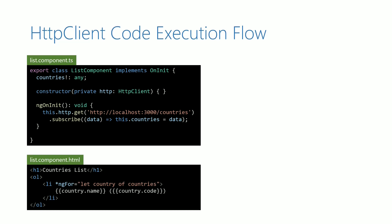When the Angular application starts, its components are loaded. When listComponent is loaded, its constructor is first called. The HTTP client service gets injected through the constructor parameter. If you are not familiar with the word inject, check the dependency injection video in this course. After the execution of the constructor, HTTP becomes a property of the listComponent with data type as HTTP client.